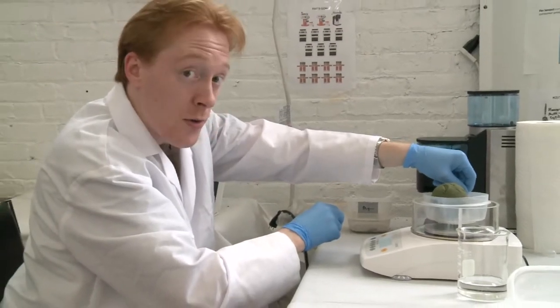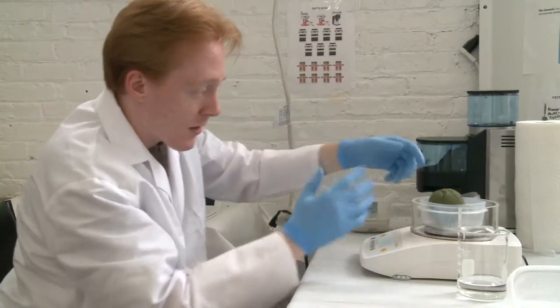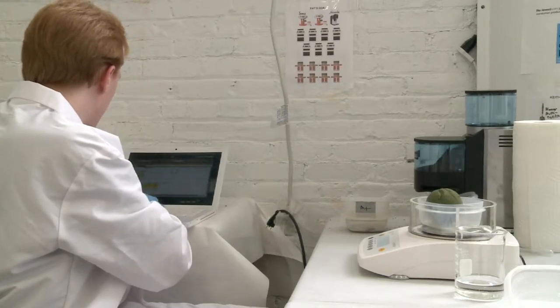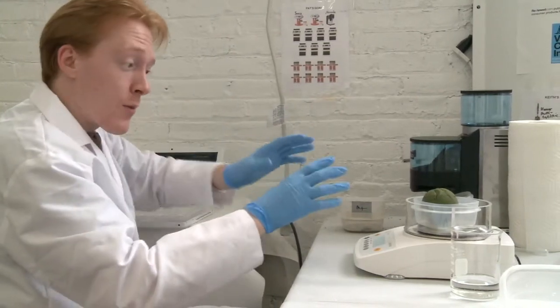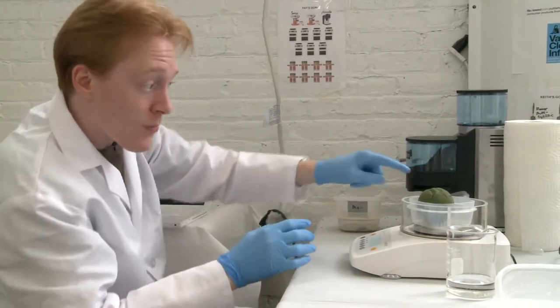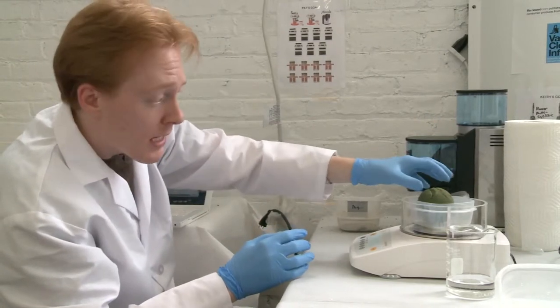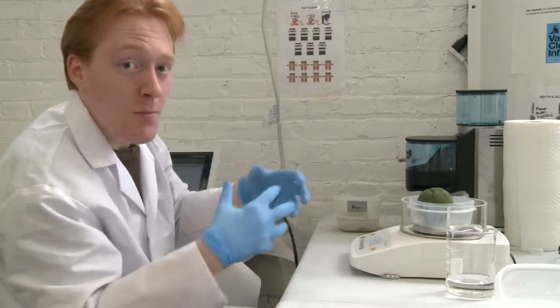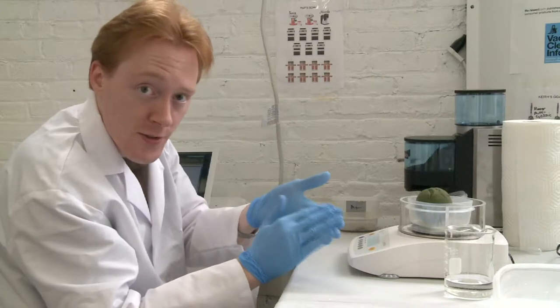So we can get the total weight of all the testing material - container, ball, water. When we test it later on, we know exactly how much water is lost because we cannot touch this. If you touch this ball, it's going to suck more moisture out into your hands because the skin in your hands is drier than the ball itself.